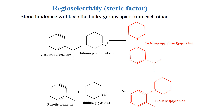In regioselectivity, another important factor is steric hindrance. Steric hindrance keeps bulky groups apart from each other. Here we can see that lithium piperidine, a bulky nucleophile, will be added to the meta position. In the case of 3-isopropylbenzene, it will be added to the meta position, because both the isopropyl and the piperidyl groups are bulky.